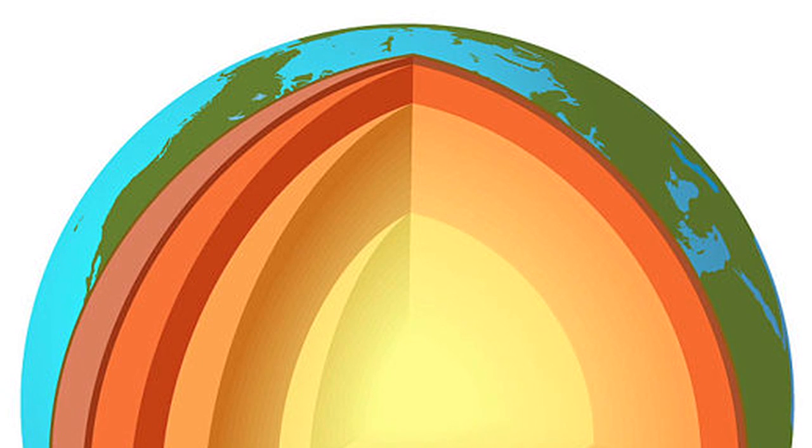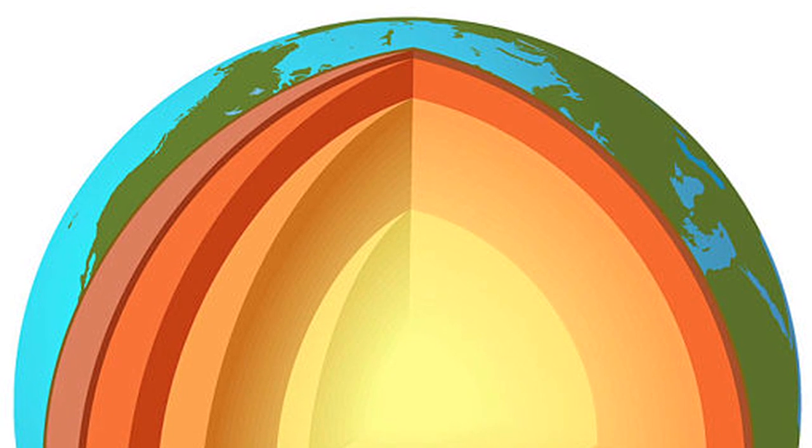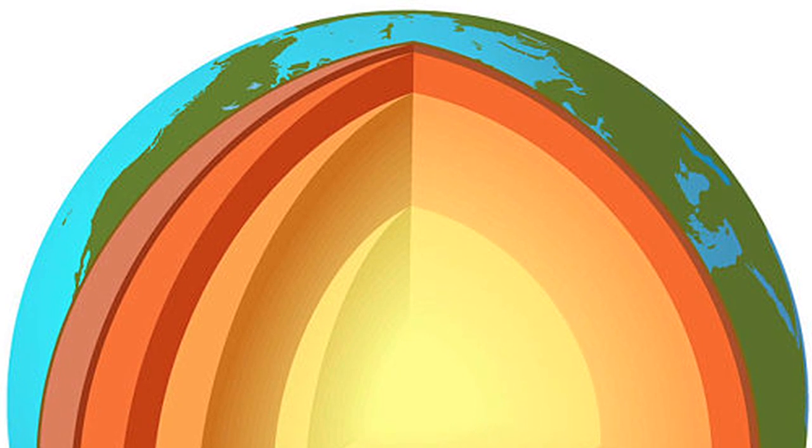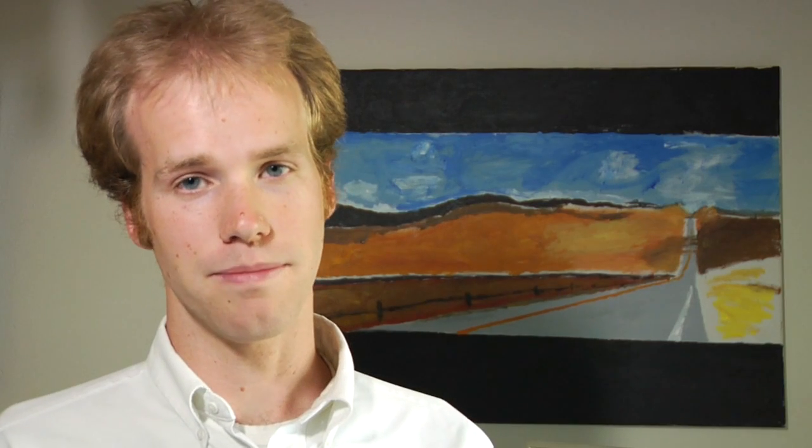So depending on whether you're looking at the core, the mantle, or the Earth's surface, you're going to get different chemical compositions. But the Earth in general is composed of about eight main elements. Within that, there's four superabundant elements and then all the rest. So we're going to look at the main elements that make up the Earth.